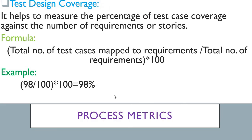Next is test design coverage, which is a very important metric. It helps to measure the percentage of test case coverage against the number of requirements or stories. The formula is: total number of test cases mapped to requirements divided by total number of requirements, multiplied by 100. For example, if you created 98 test cases against 100 requirements, your test coverage would be 98 / 100 × 100 = 98%. This is a very important test metric.